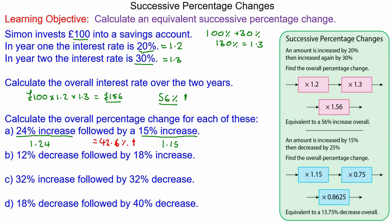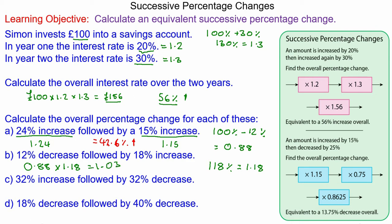For question b, we have a 12 percent decrease, which is 100 percent minus 12 percent, which is 88 percent, or 0.88. This is followed by an 18 percent increase, which is 118 percent, which when divided by 100 is 1.18. So the overall percentage change is 1.384, which is a 3.84 percent increase overall.